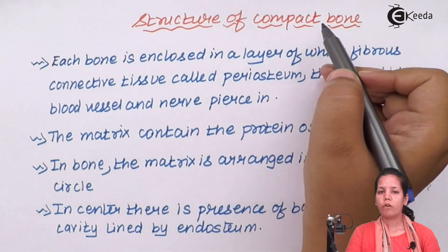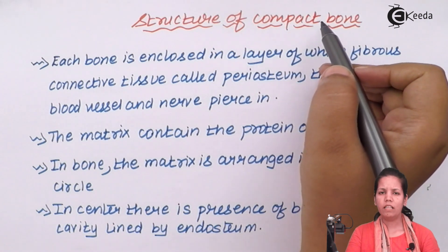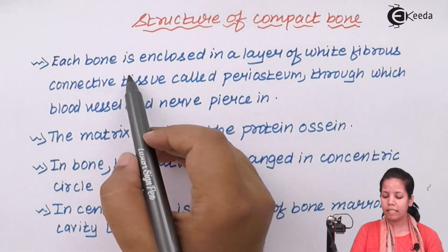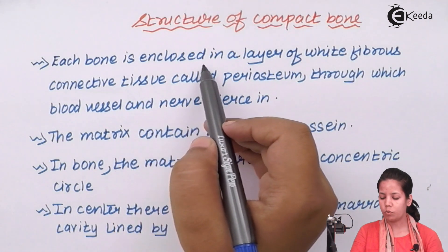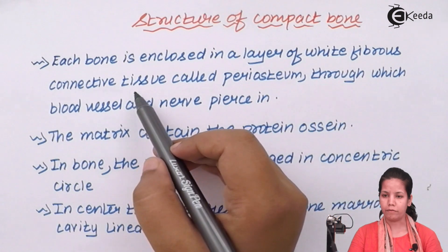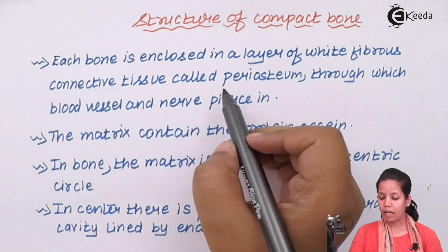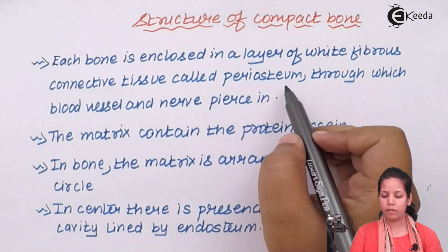The structure of compact bones - when we study the structure of compact bones what we notice is that each of this bone is enclosed by a layer of white fibrous connective tissue. Being enclosed by this white fibrous connective tissue, they are also called periosteum.